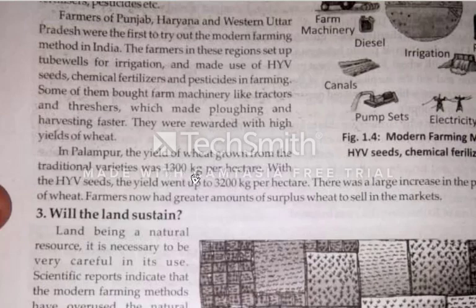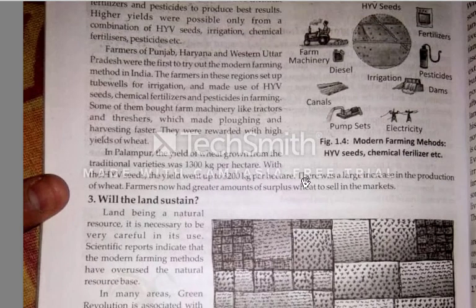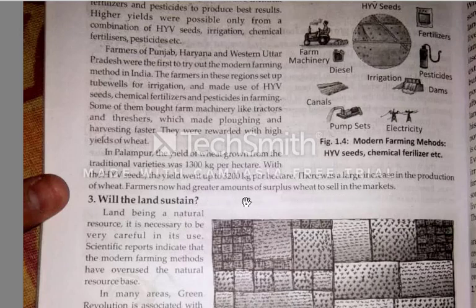There was a large increase in the production of wheat. Because of this production increase, farmers now had a greater amount of surplus wheat to sell in the markets — they had extra wheat to sell.